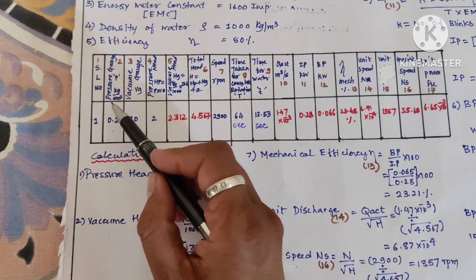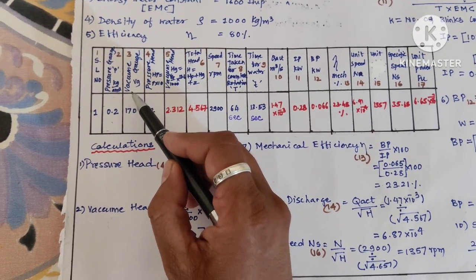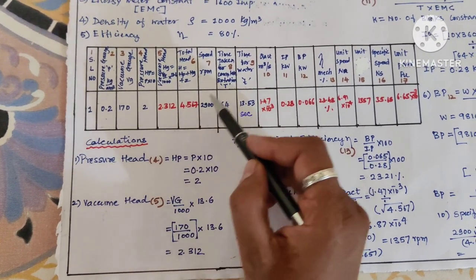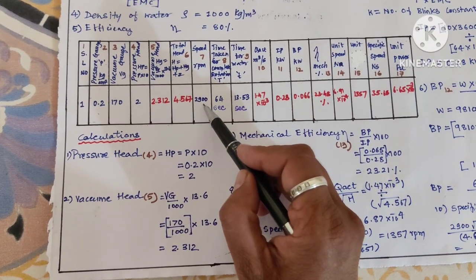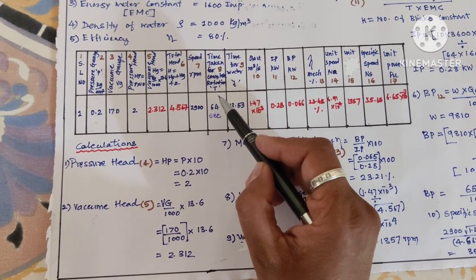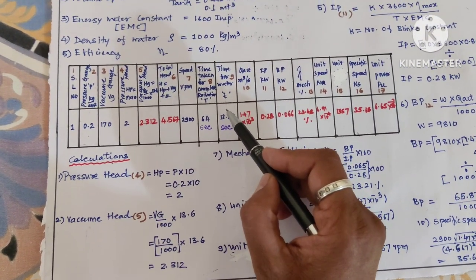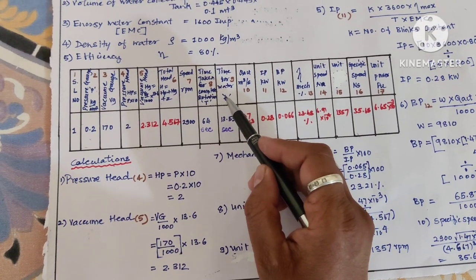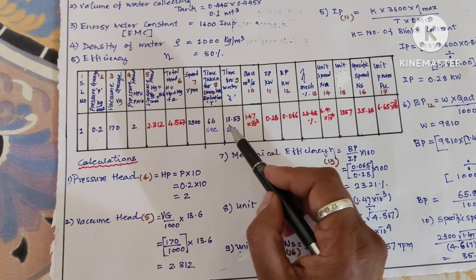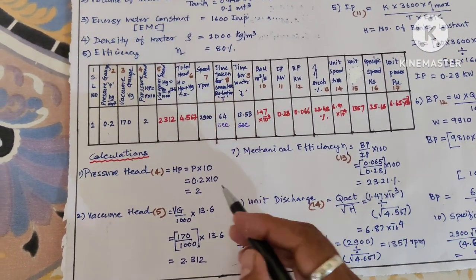0.2 is the reading shown on pressure gauge, 170 is the reading shown on vacuum gauge, the speed is 2900 rpm. For 10 blinks of energy meter it is taking 64 seconds, and to collect 20 liters of water in the tank it is taking 13.53 seconds.